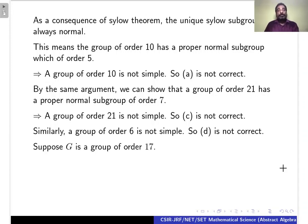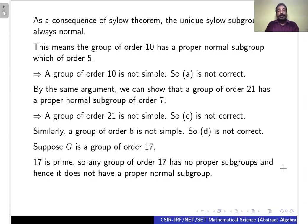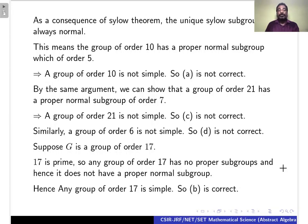Suppose G is a group of order 17, and 17 is a prime number. Any group of order 17 has no proper subgroups, and hence it does not have a proper normal subgroup. Therefore, any group of order 17 is simple. Therefore, the correct option is B.